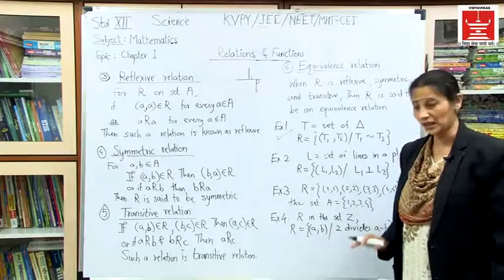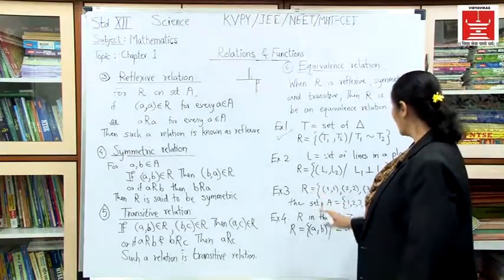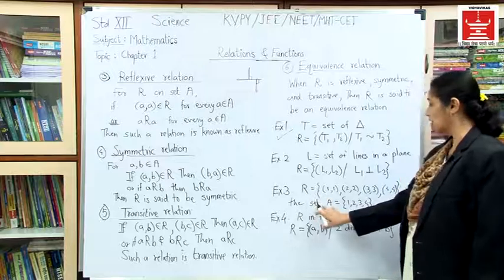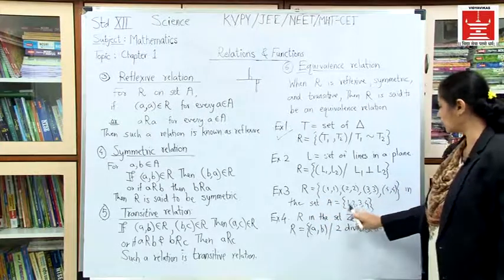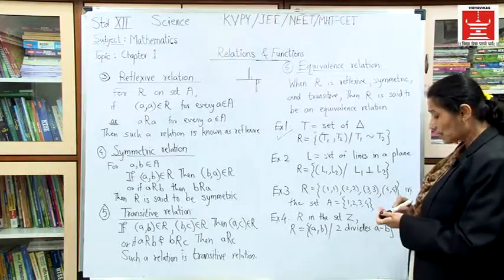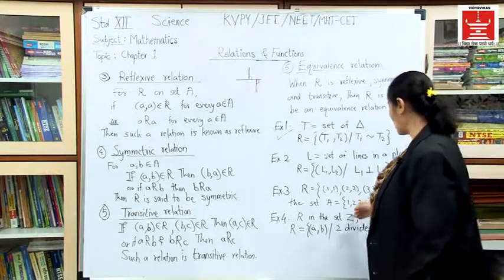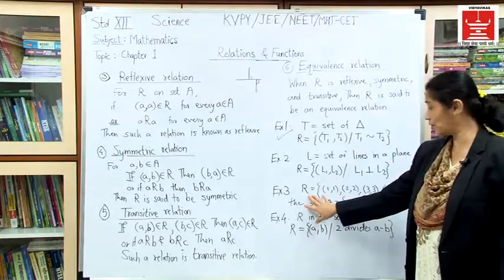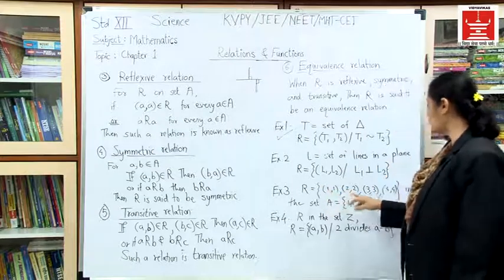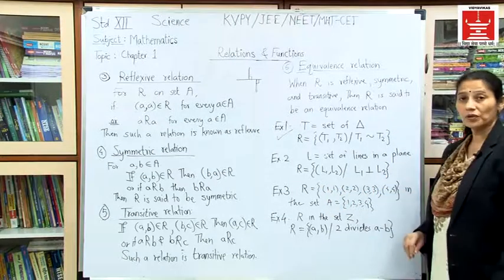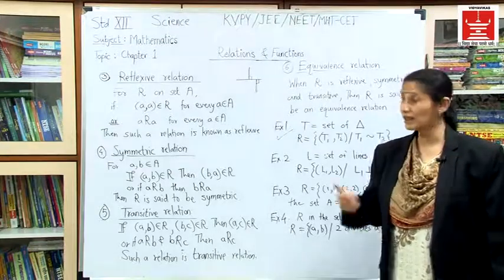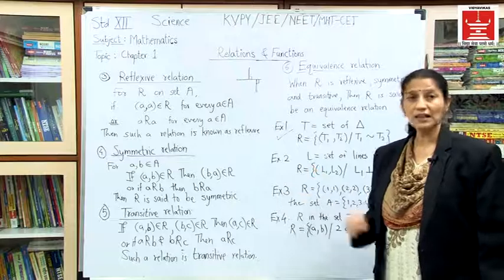Now we check Example 3. Here the set A is {1, 2, 3, 4}. The relation R contains the ordered pairs: (1,1), (2,2), (3,3), (4,4). We will now check reflexivity, symmetry, and transitivity.